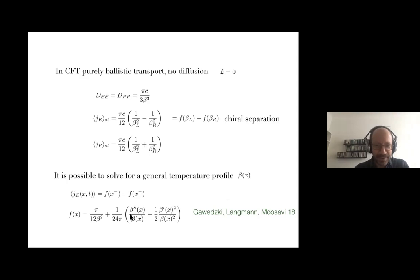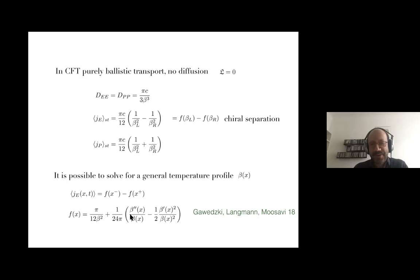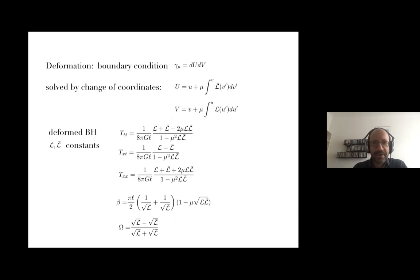In a CFT one can even solve a more general problem where the initial temperature profile is not discontinuous but a generic function, obtaining the same difference-of-left-and-right-mover structure but with a function related to the Schwarzian derivative of the temperature profile. The Schwarzian appears because finite temperature is conformally related to zero temperature, so the expectation value of the stress-energy tensor is given by the Schwarzian of the conformal map.